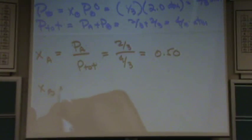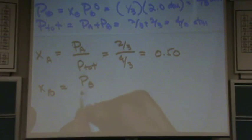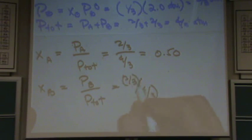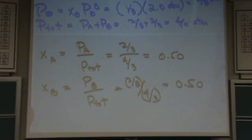And XB above the solution would be, again, Dalton's law. It would be, again, 2 thirds divided by 4 thirds. PA and PB happen to be equal. And so this is above the solution.